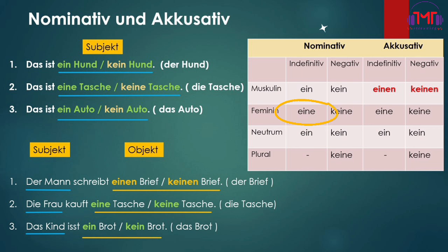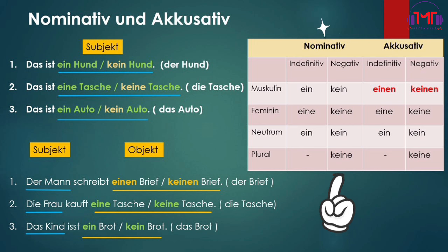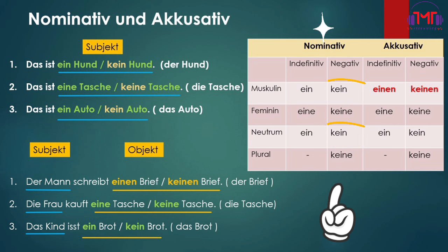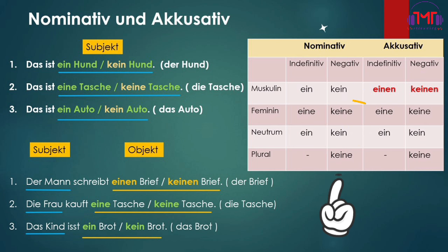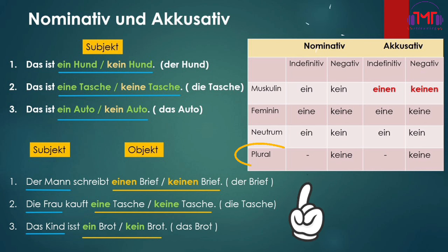The masculine is indefinite article. Feminine is a negative article. Now we will see the negative article. The negative is a negative article. The other thing is that 'kind' is a negative. The masculine is a negative. The feminine is a negative. The indefinite article has a positive solution. In this case, it is the negative.